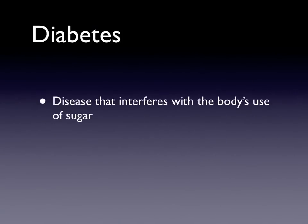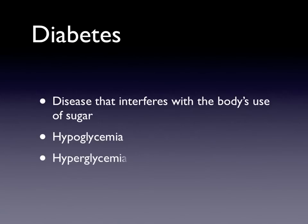Diabetes is a disease that interferes with the body's use of sugar, usually because the pancreas is no longer secreting insulin. Insulin is required for the body's cells to use sugar — it's like a key to a lock. The only cells that don't require insulin are brain cells and the central nervous system, which bathe in cerebral spinal fluid and can use sugar directly. There are two emergencies to consider: hypoglycemia (low blood sugar) and hyperglycemia (high blood sugar).